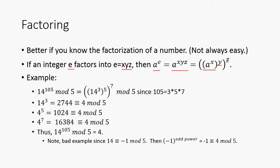So if we evaluate 14 to the 105 mod 5, it's simply going to be 14 to the 3rd, to the 5th, to the 7th, modulo 5, since 105 is 3 times 5 times 7. So 14 to the 3rd is going to be 2,744, which is 4 mod 5. Now we can take 4, which is equivalent to 14 to the 3rd, and we can raise that to the 5th power, and we're going to get 1024, which is 4 mod 5.